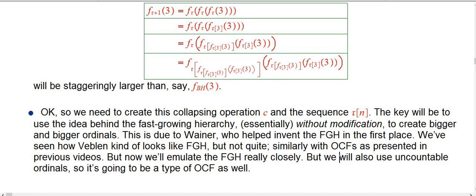We are going to use uncountable ordinals, and it's going to have a certain collapsing property in itself. So we're going to use uncountable ordinals to create countable ordinals. So it is really a species of ordinal collapsing function as well.